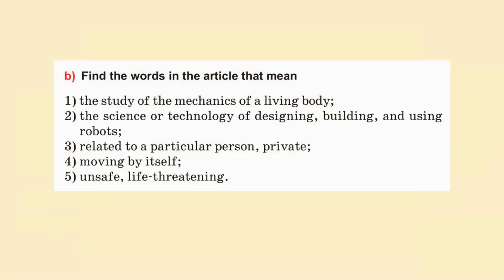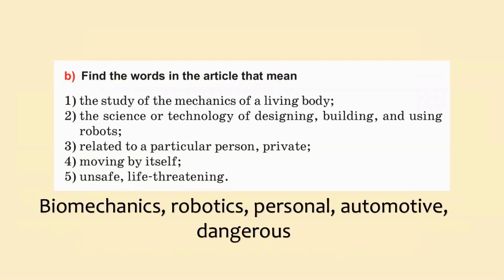Now find the words in the article that mean: The study of the mechanics of a living body. The science or technology of designing, building and using robots. Related to a particular person or private. Moving by itself. And unsafe, life-threatening. Now let's check the answers. Number one is biomechanics. Number two is robotics. Number three is personal. Number four is automotive. Number five is dangerous.